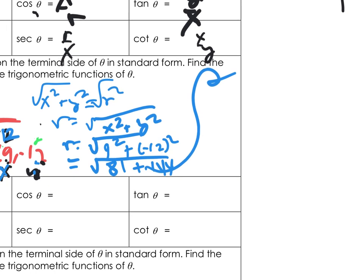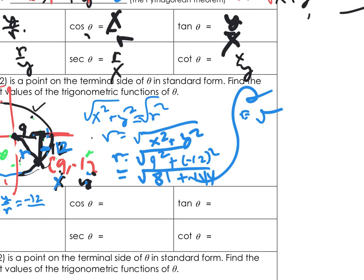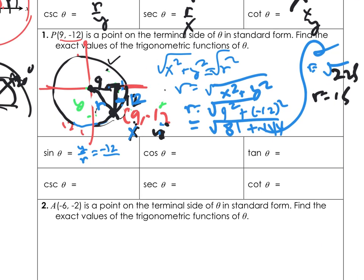√225 — that's a perfect square. √225 = 15, so r = 15. Now I know that 15 goes as the denominator.